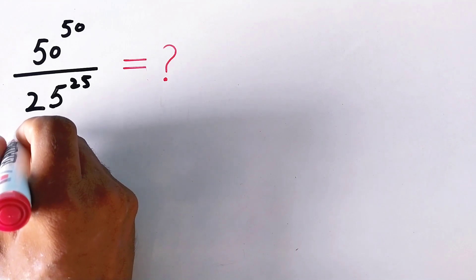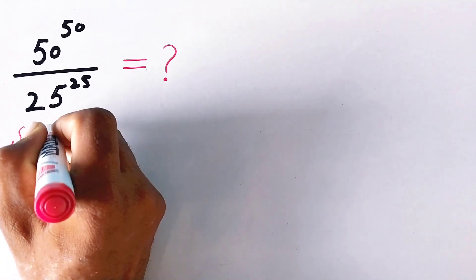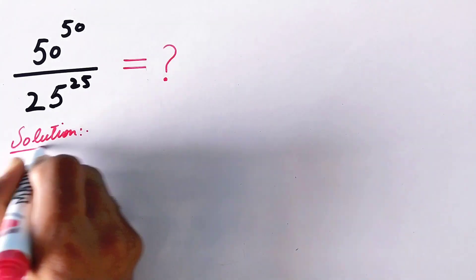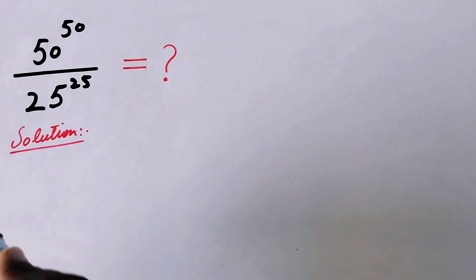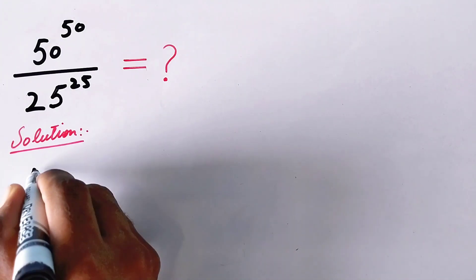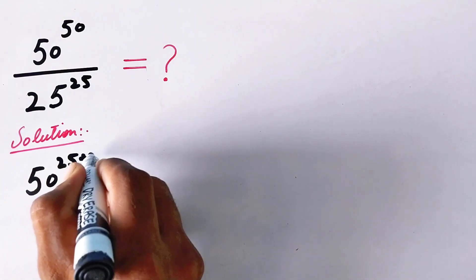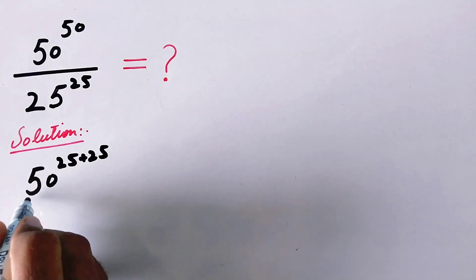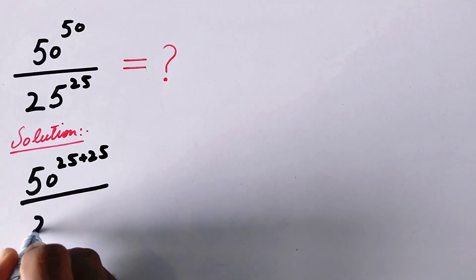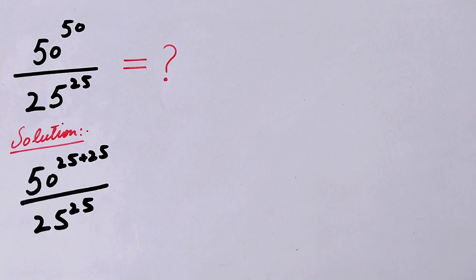So here is its solution. In the first step, we can write 50^50 / 25^25 as 50^(25+25) / 25^25.